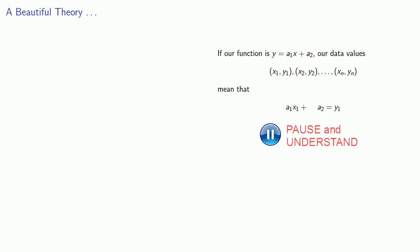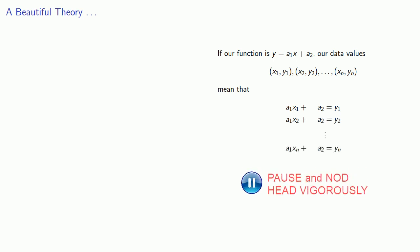So if our function is y equals a1x plus a2, our data values mean that a1x1 plus a2 should give us y1, a1x2 plus a2 should give us y2, and so on. And we can express this in matrix form.